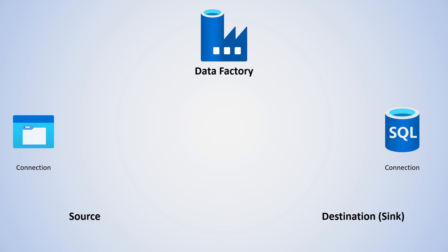Each of these will be programmed with some sort of connection — think of that connection string. Within Data Factory, we're going to create what's called a linked service, for example blob storage or SQL database. Next is a dataset, and that will be what's stored in memory to be moved along the way — it takes the data from that connection and linked service and puts it into something that can be worked with.